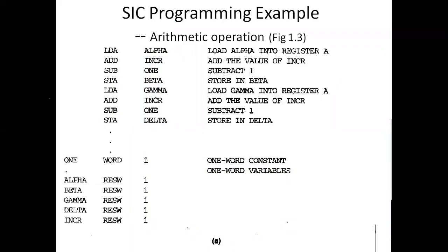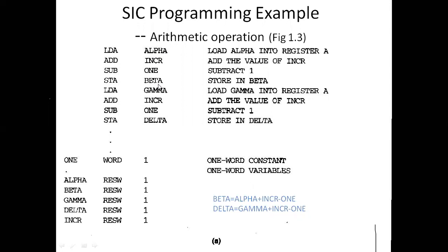In the SIC arithmetic operation example, a program has three columns: labels, mnemonics, and variables. The variables used are ALPH, INCR, ONE, BETA, GAMMA, and DELTA — all are memory locations. ONE is allocated one word of data with WORD. ALPHA, BETA, GAMMA, and DELTA use RESW to reserve words. INCR is also a reserved word used as an increment value.